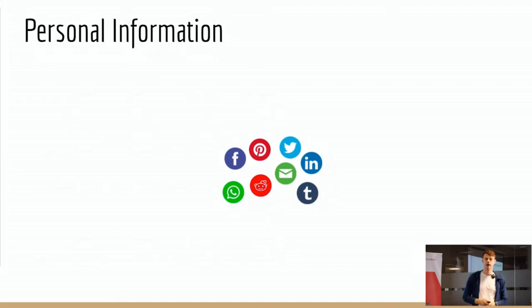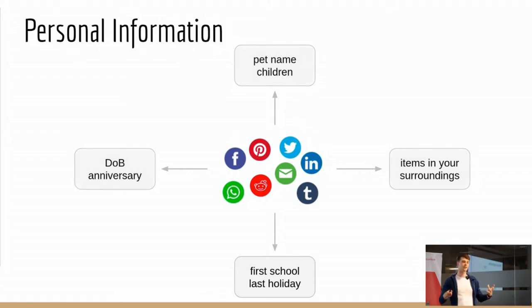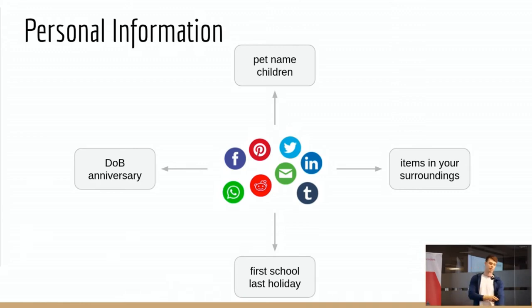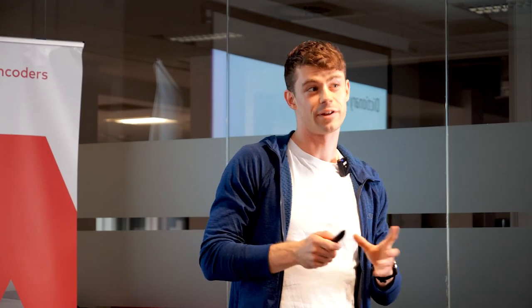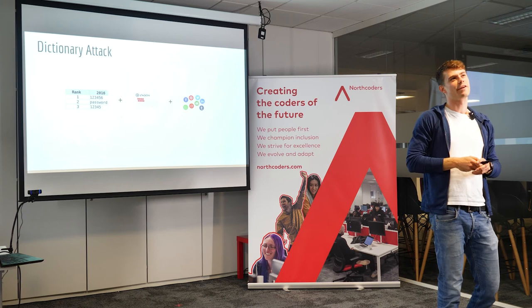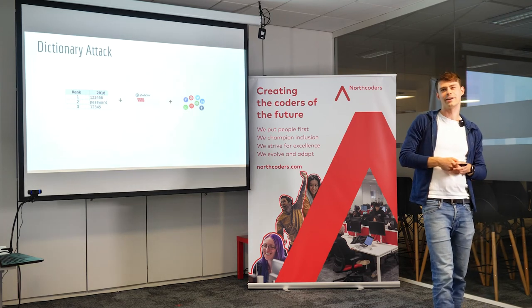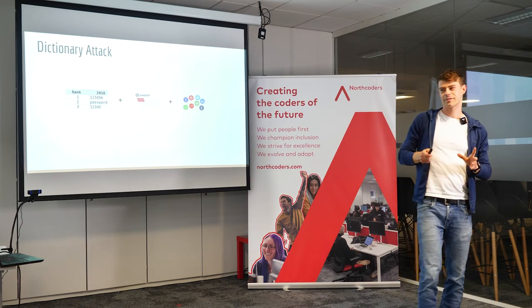We include substitutions in our dictionary. The final step is personal information. We share loads of stuff all the time — photos, holiday locations, friends we hang out with. People can scrape your social media accounts for this information and include it in their dictionary. I'm very guilty of using items from my surroundings — sometimes I look around, see a book, and think that book title looks random so I'll use it. That's a terrible idea, because a photo of me in my room could expose it. Combining common passwords, patterns, and personal information makes the probability of cracking your password really high.